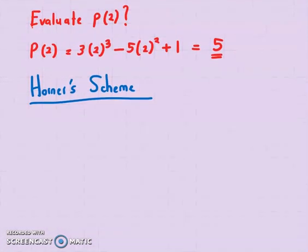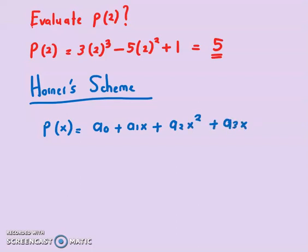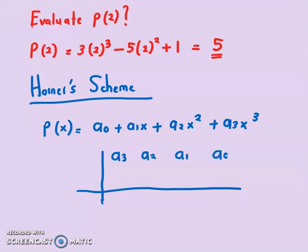For example, you have this polynomial of degree 3 given as a₀ + a₁x + a₂x² + a₃x³. Now first, to use Horner's scheme, do like a table here. The highest degree coefficient a₃ you will write in the first column, and then reduce it to a₀. So we have a₃, a₂, a₁, a₀.